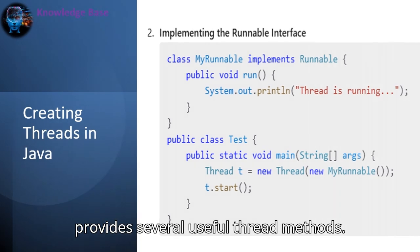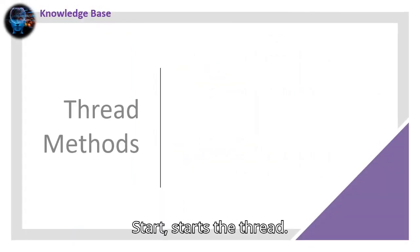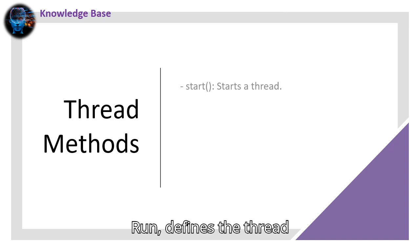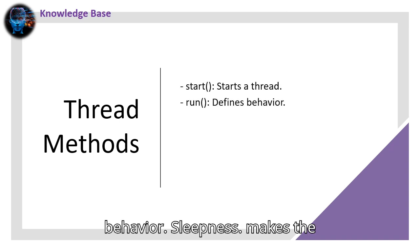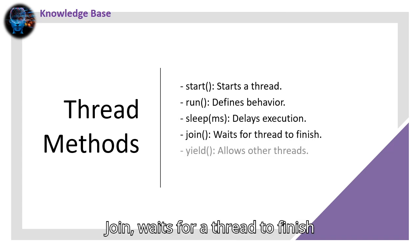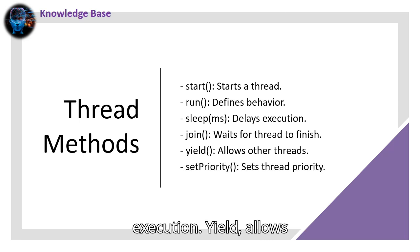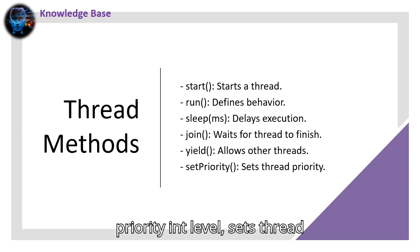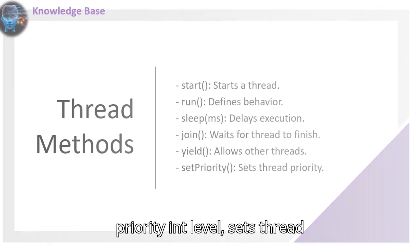Java provides several useful thread methods: start() — starts the thread; run() — defines the thread behavior; sleep(ms) — makes the thread pause for a specified time; join() — waits for a thread to finish execution; yield() — allows other threads to execute; setPriority(int level) — sets thread priority.